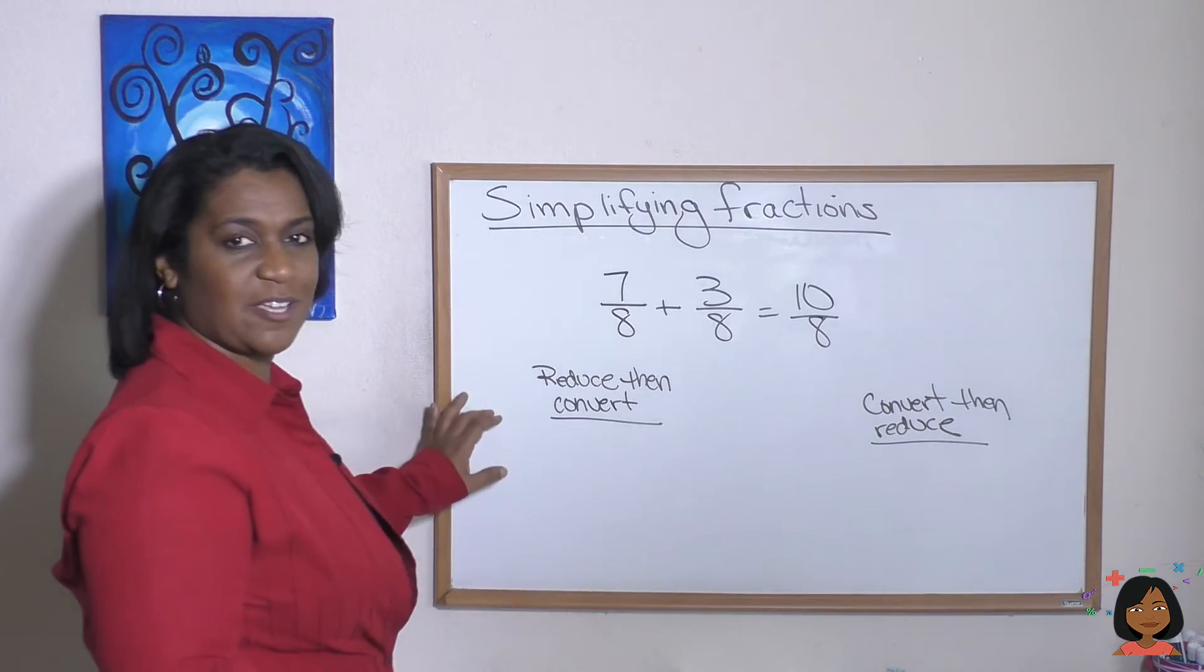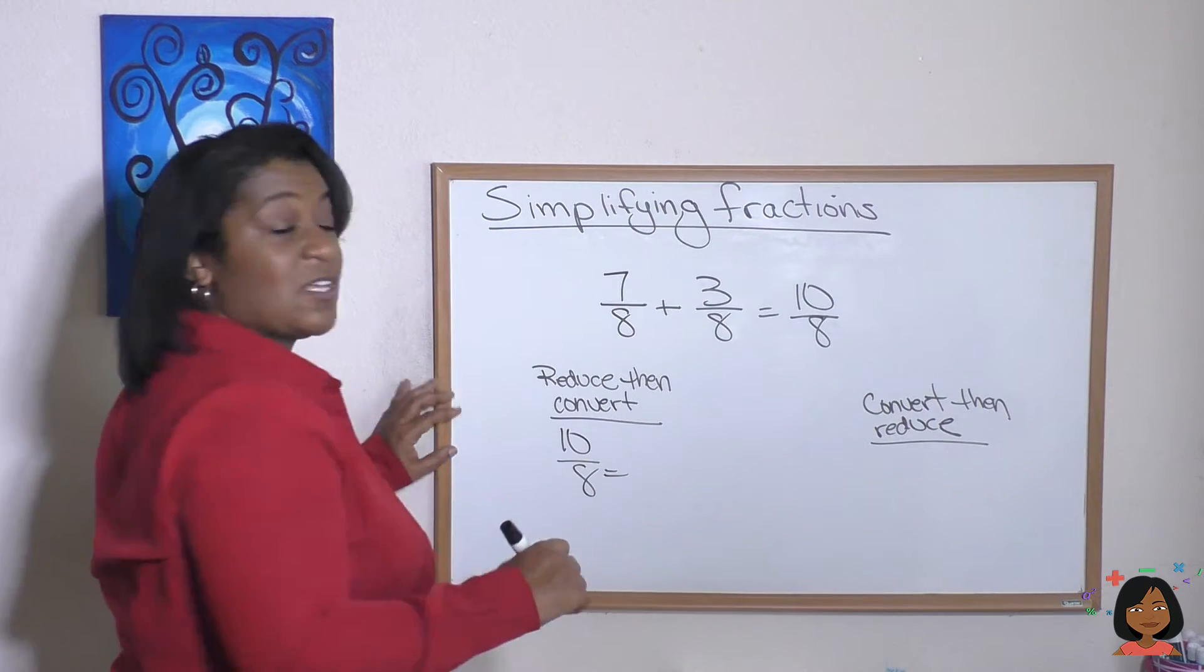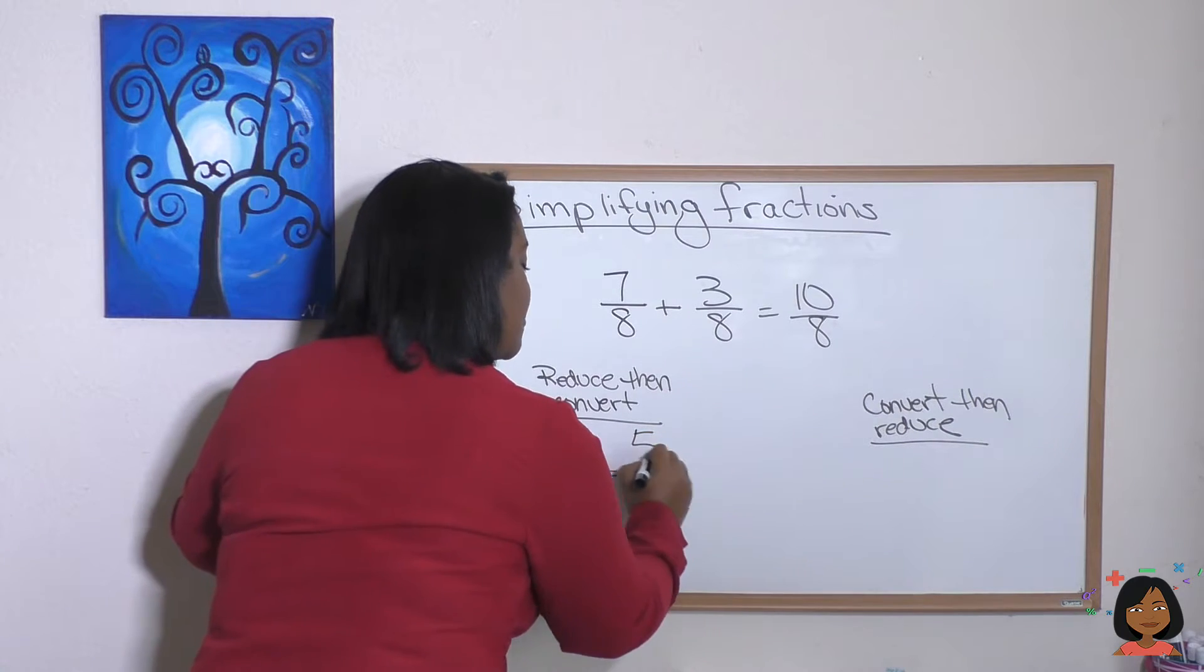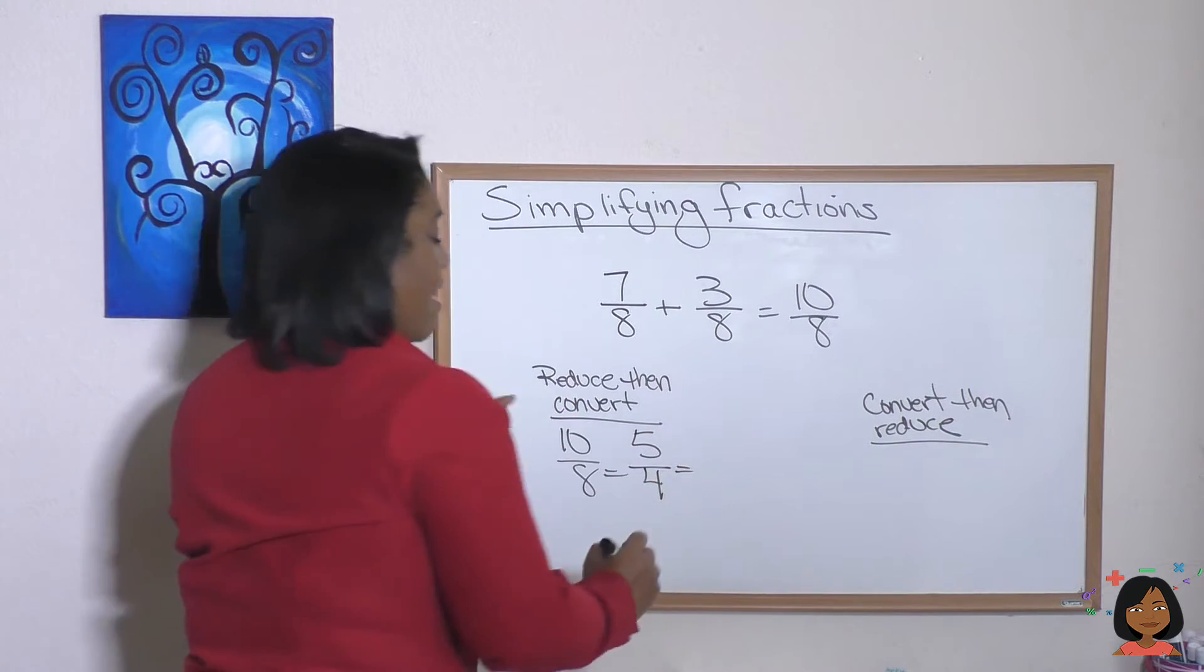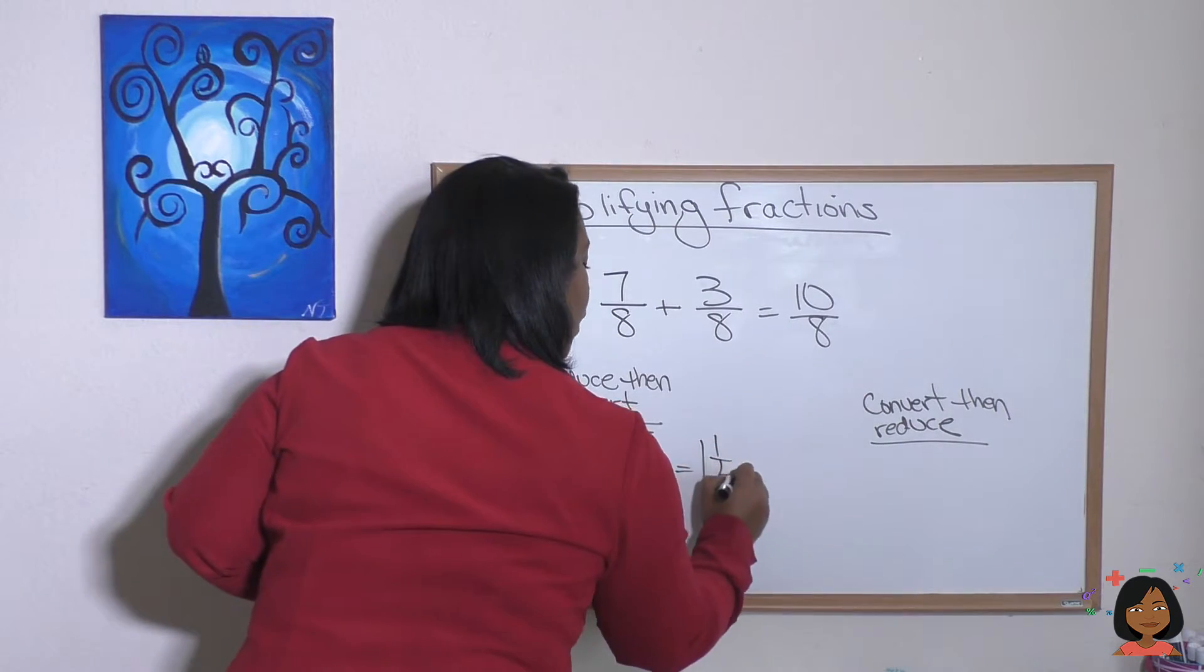Let's start with reduce then convert. So 10 eighths can be reduced down. Two is a factor of both of these. So this can be reduced down to five fourths. And then we can convert it to a mixed number, which would be one and one fourth.